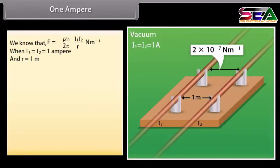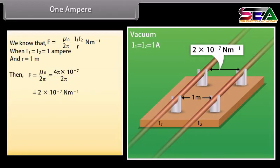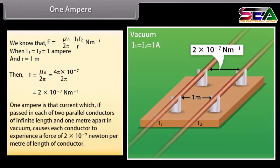We know that F = (mu nought / 2 pi) × (I1 I2 / R). When I1 = I2 = 1 Ampere and R = 1 meter, the value of F = 2 × 10⁻⁷ Newton per meter. Therefore, 1 Ampere is that current which, if passed in each of two parallel conductors of infinite length placed 1 meter apart in vacuum, causes each conductor to experience a force of 2 × 10⁻⁷ Newton per meter of length.